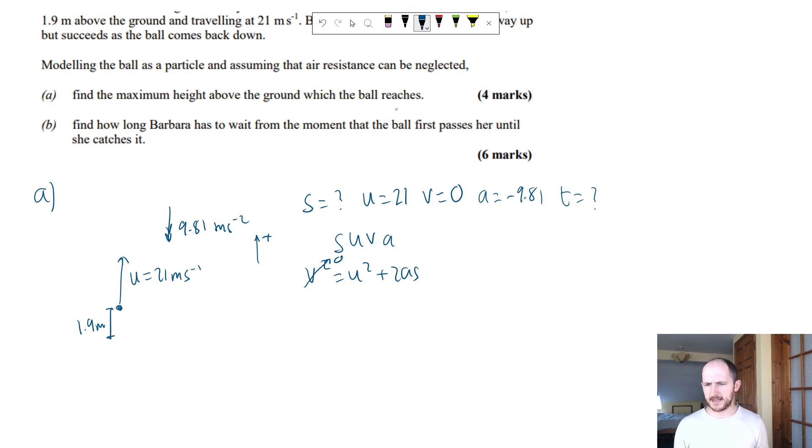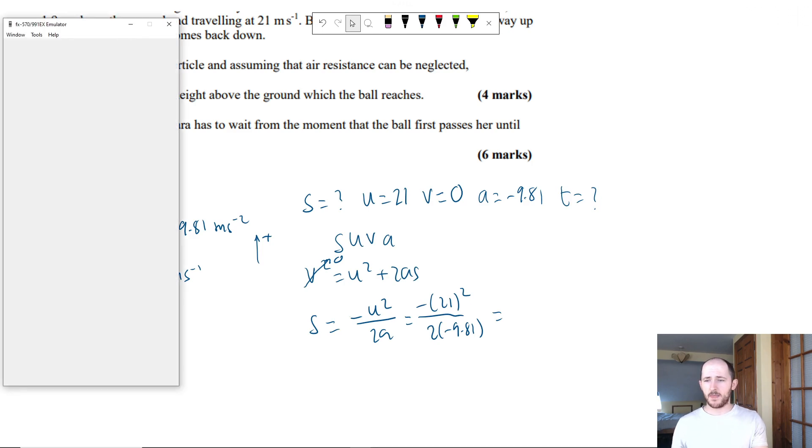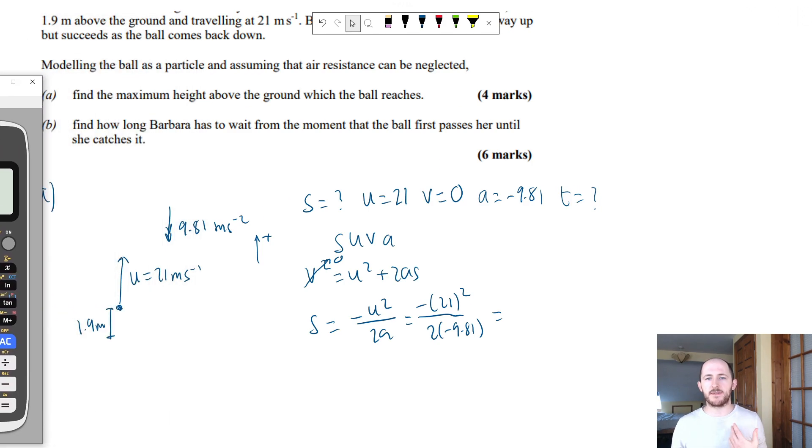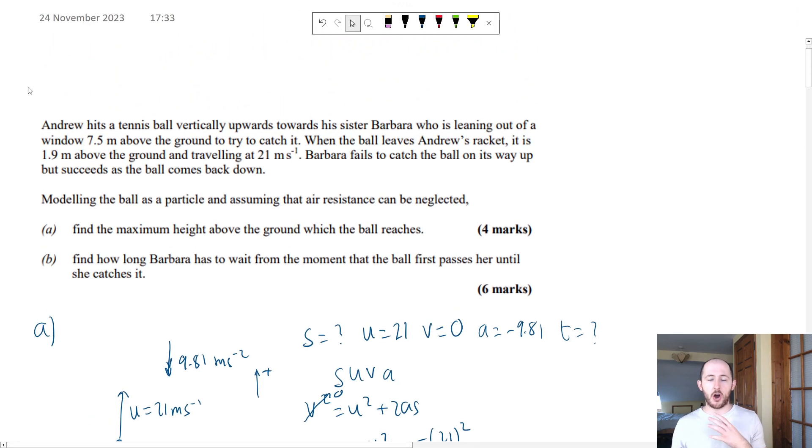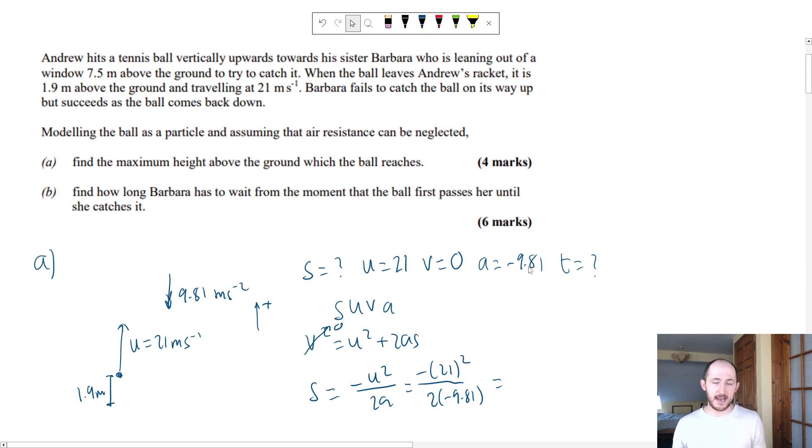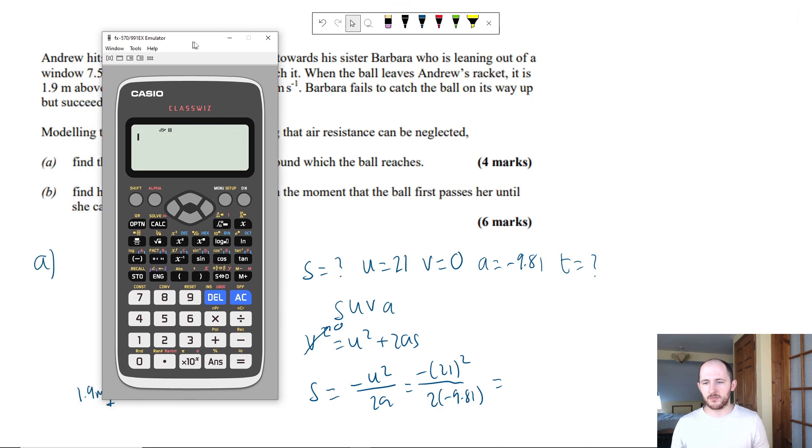And this is quite useful because V is zero in this question. Now, if I rearrange this for S, we get negative U squared over 2A. Subbing the values, we have negative 21 all squared over 2 times minus 9.81. Now, in terms of my value for gravity, I know some of you use different values. So sometimes 9.8, sometimes they say to use 10. The way you decide is that in the paper itself, it will tell you. This is actually an old spec question where you had to use A as 9.81.